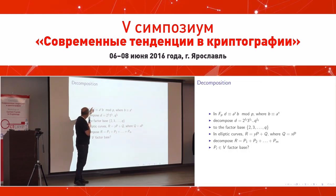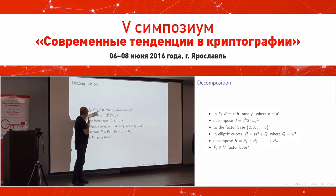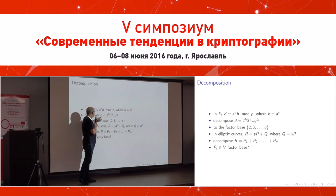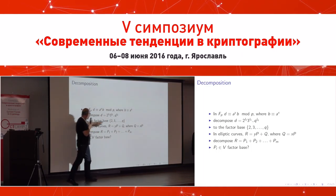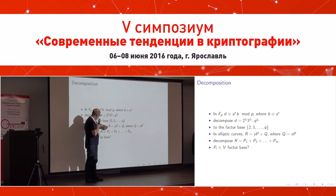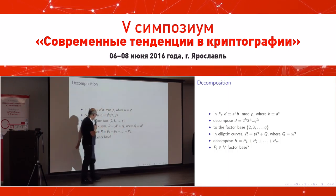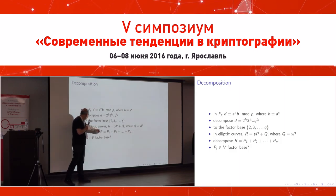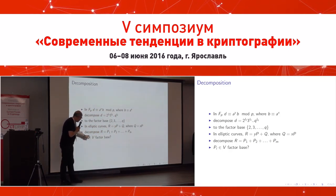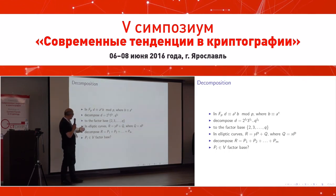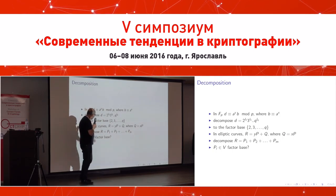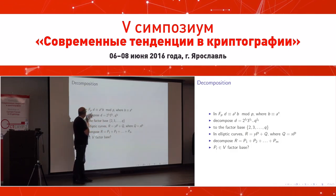In finite fields, we compute a number D related to A and B for a known random Y, reduce it modulo P, and try to decompose D into a product of small numbers — the factor base. In elliptic curves, we can similarly compute a point and then try to represent this point as a sum of M points where the points come from some small set. This is the decomposition. If we can solve this efficiently, we get the same index calculus structure as for finite fields.